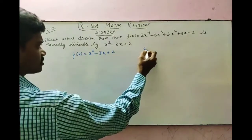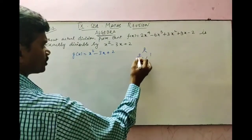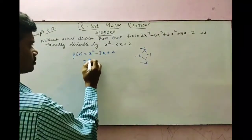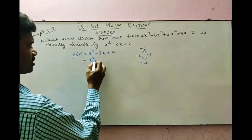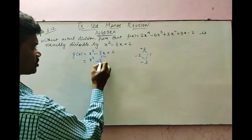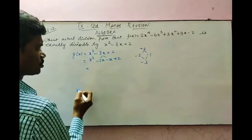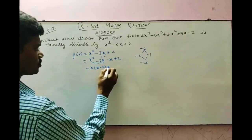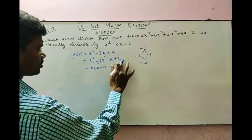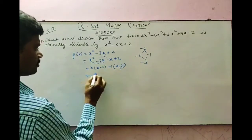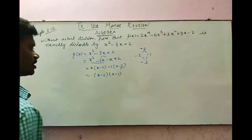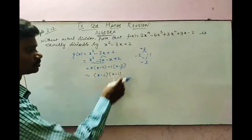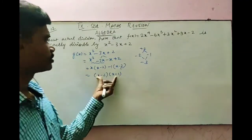Factorize x squared minus 3x plus 2 using the sum-product method: 2 times 1 is 2, and minus 1 plus minus 2 gives minus 3. So split as minus 2x minus x plus 2. Taking x as common from the first two terms gives x(x minus 2), and taking minus 1 as common from the last two gives minus 1(x minus 2). Taking x minus 2 as common gives (x minus 2)(x minus 1).